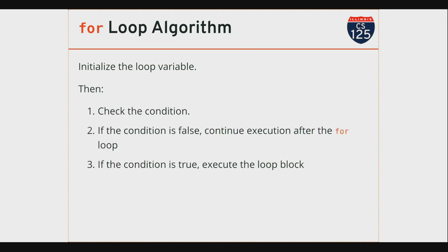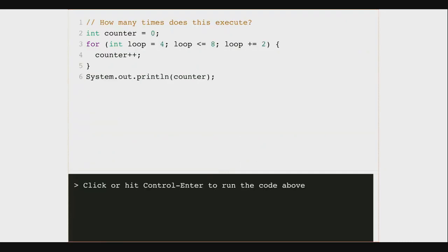This is basically the algorithm that Java is executing when it runs a for loop: check the condition — if false, continue execution; if true, rerun the block; after the block finishes, run the update statement; and repeat until it's not true. Most of the loops you see are going to start a variable at zero, check that it's less than some value, and increment by one. I suspect 98% of the for loops I've written in my life are that kind.